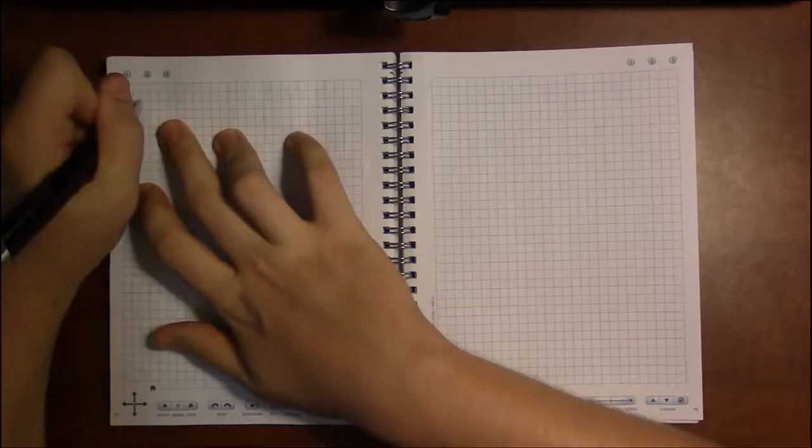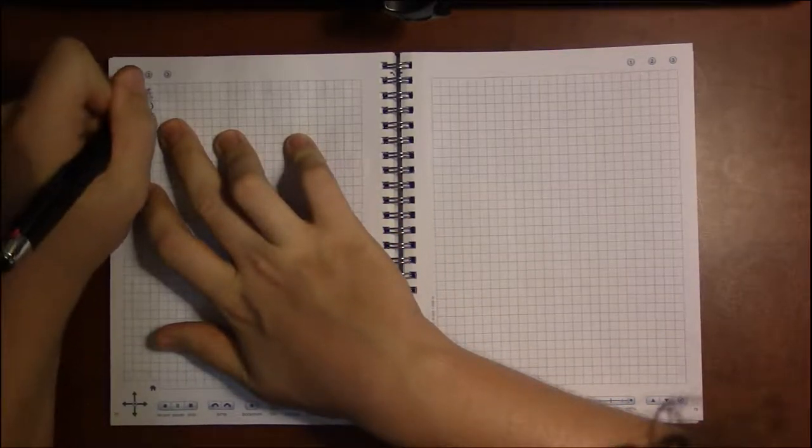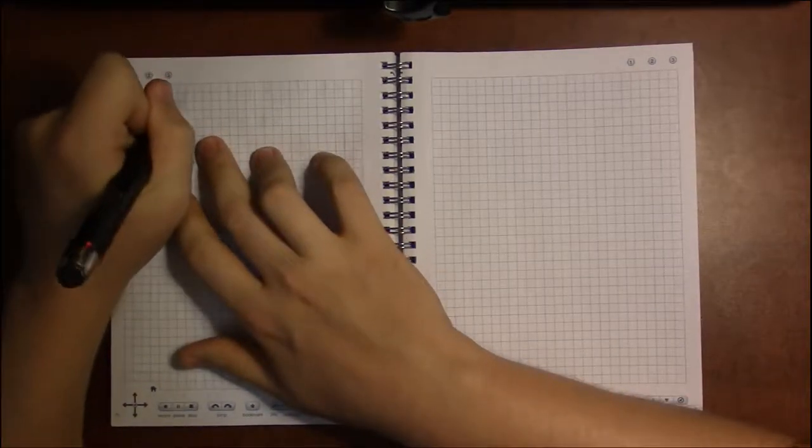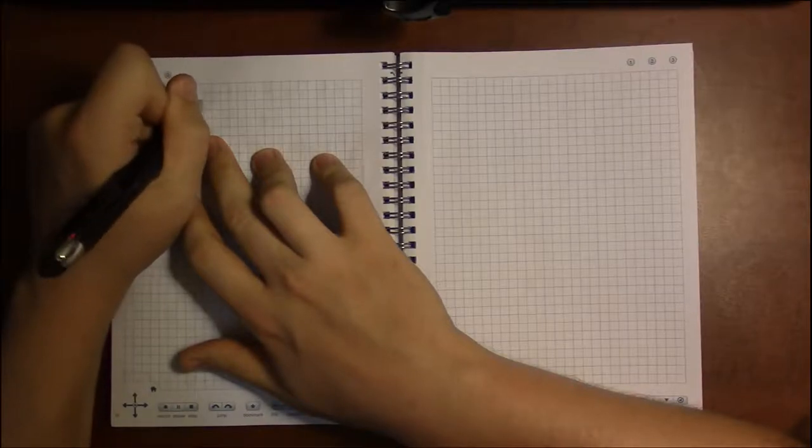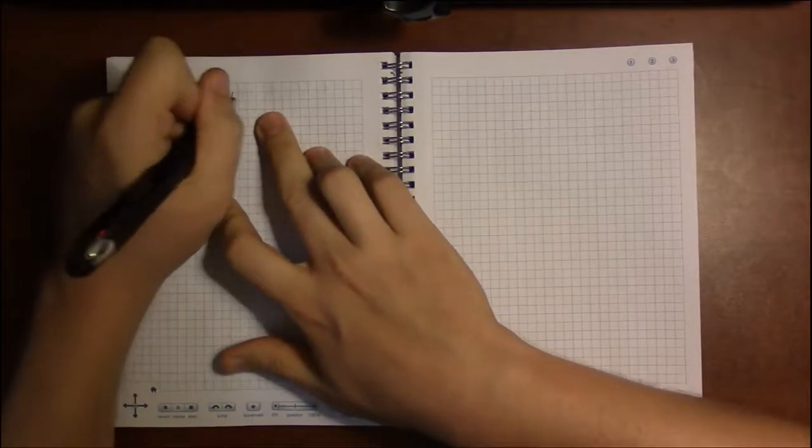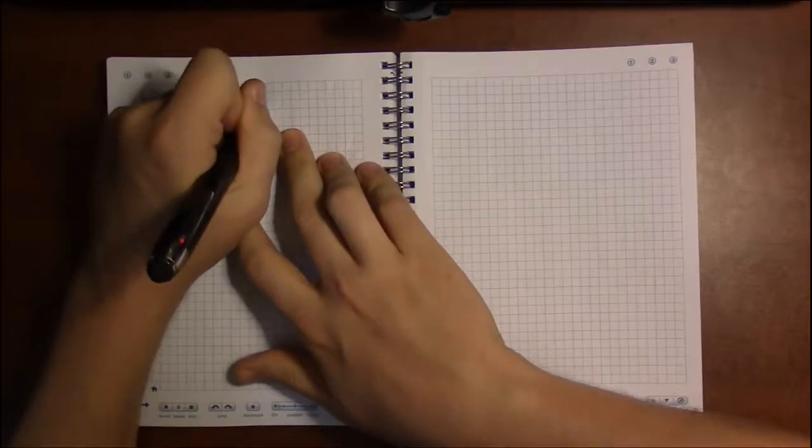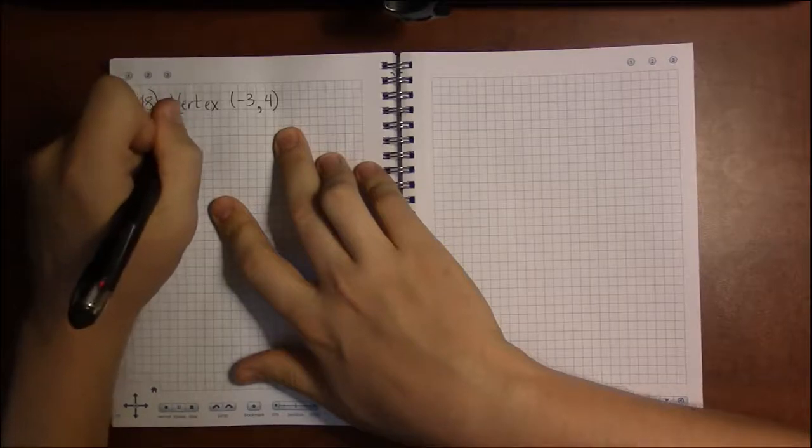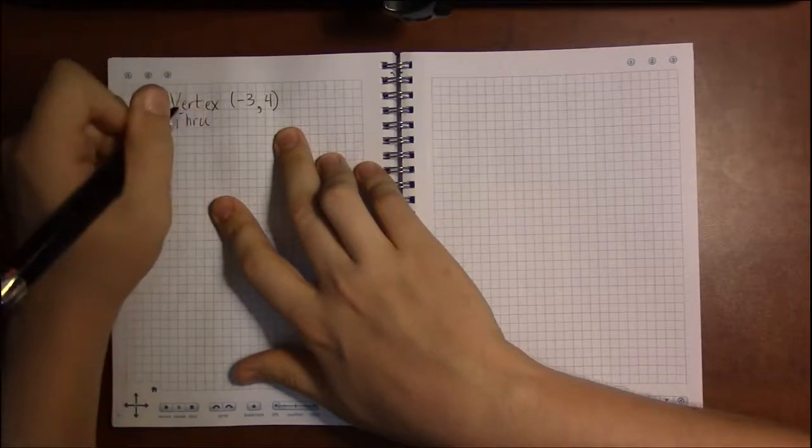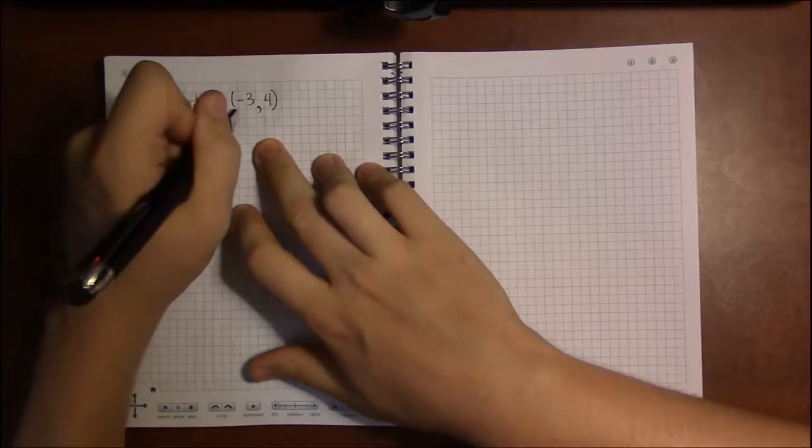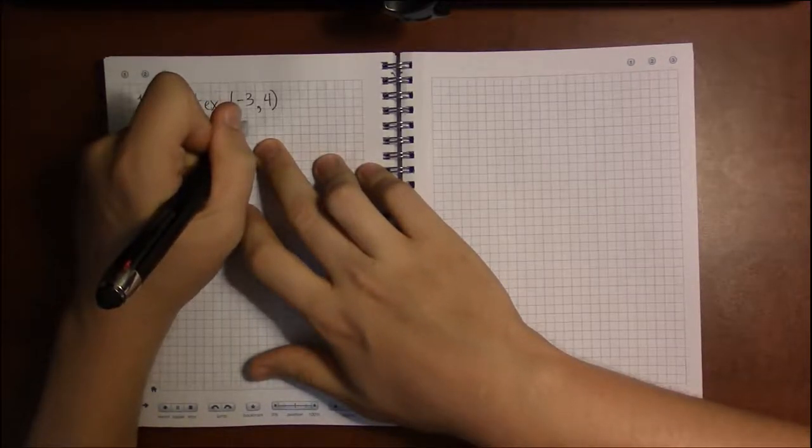So in the same section, if we look at number 18, they tell us that the vertex is located at the point (-3, 4) and the point which lies on the graph is the point (0, 0).